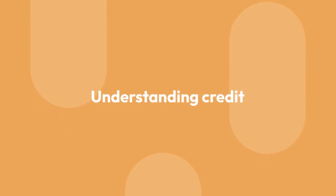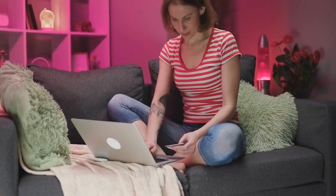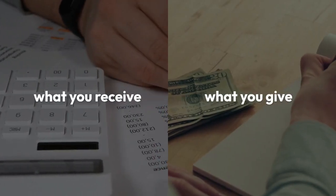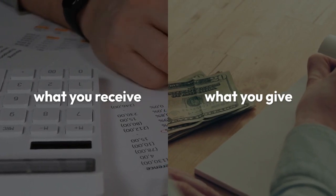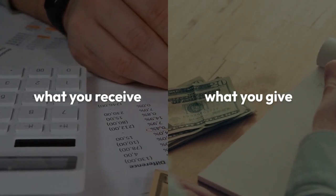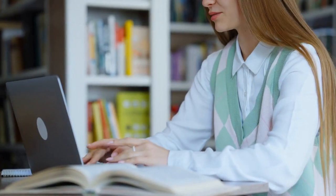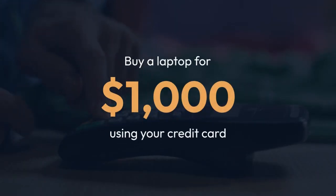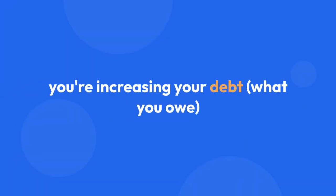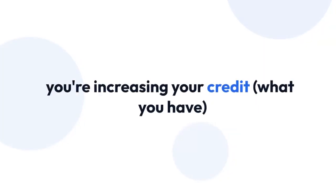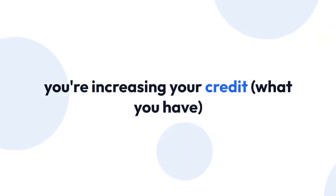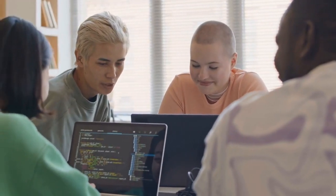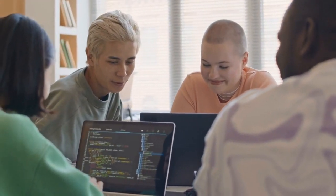Understanding Credit. Now let's talk about credit. When you buy something, there are two sides to the transaction: what you receive and what you give. Credit is like keeping track of this exchange. If you buy a laptop for $1,000 using your credit card, you're increasing your debt — what you owe — but you're also increasing your credit — what you have. It's like a seesaw: when one side goes up, the other goes down.